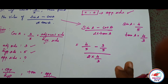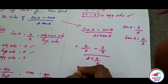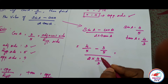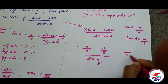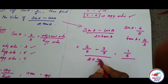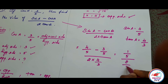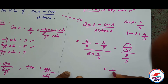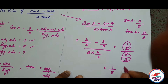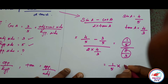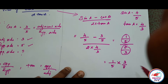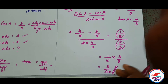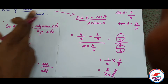So simplifying: 4 by 5 minus 3 by 5 — denominator is same, so no need for LCM. 4 minus 3 is 1, giving 1 by 5. Then 2 into 4 by 3 is 8 by 3. So we divide: 1 by 5 divided by 8 by 3. Taking the reciprocal, we get 3 by 8. The answer is 3 by 40. So the final answer — value of sin a minus cos a by 2 tan a is equal to 3 by 40.